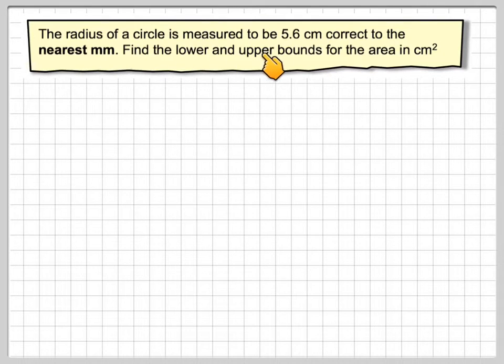The radius of a circle is measured to be 5.6 centimeters correct to the nearest millimeter. Find the upper and lower bounds for the area in centimeters squared.